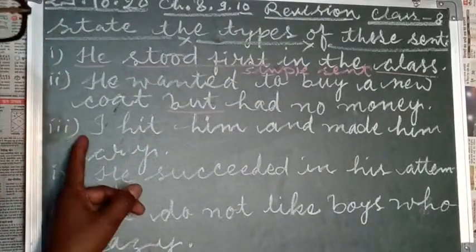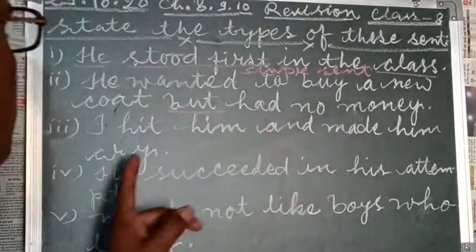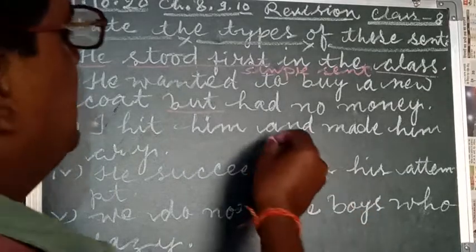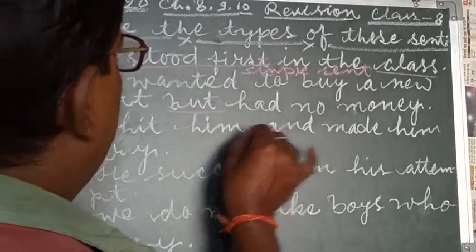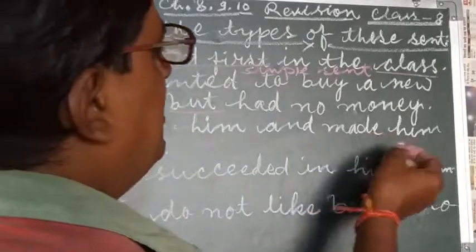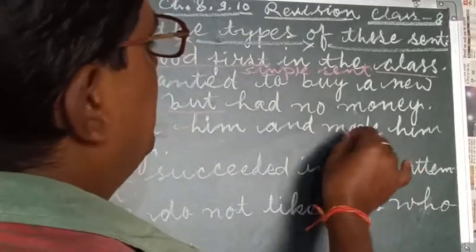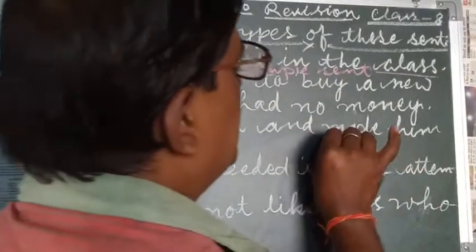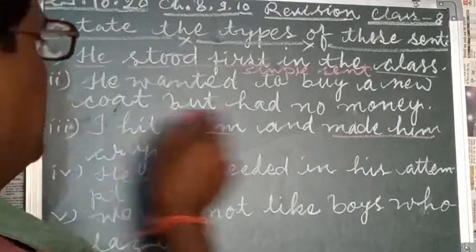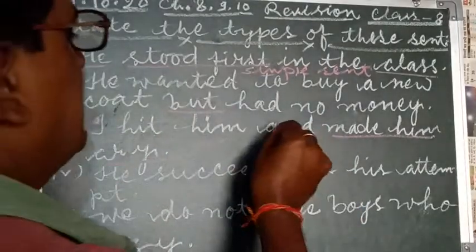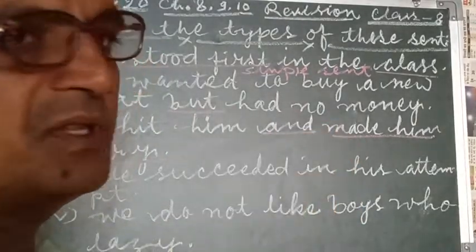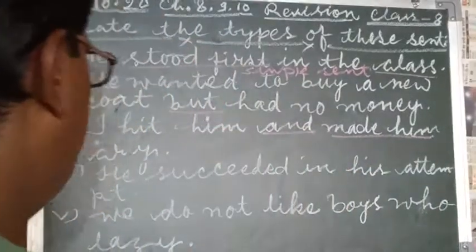Number three: I hit him and made him cry. In it also you are looking, 'I hit him' is one clause, and 'I made him cry' is the second clause. And connected here with the coordinate conjunction 'and'.